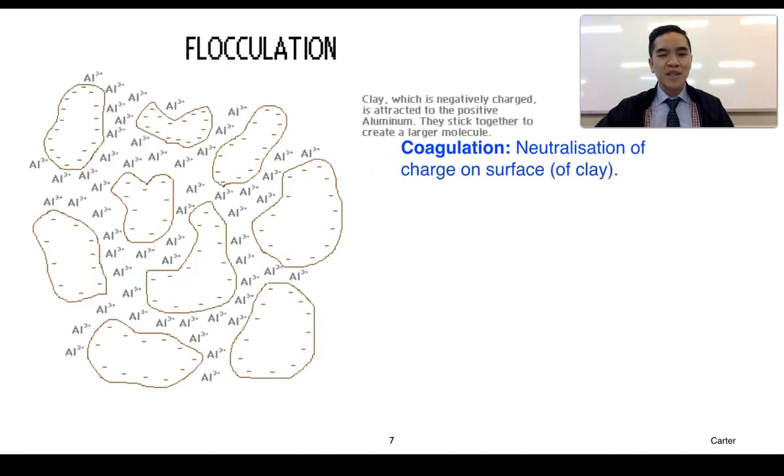A method to remove these clay particles is coagulation and flocculation. Coagulation involves the neutralisation of the charge on the surface of clay particles. Because it's highly negatively charged, we would need something that is highly positively charged to help balance out and neutralise that charge. Aluminium ions are typically used to neutralise this charge because they have a high charge density.